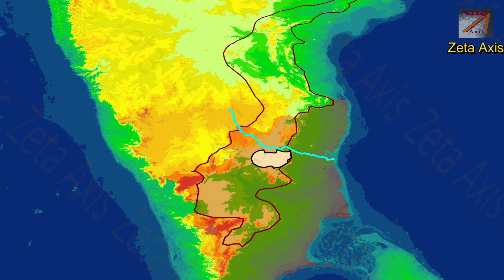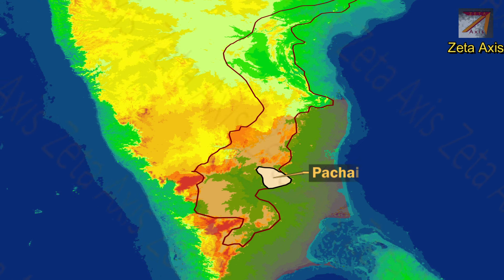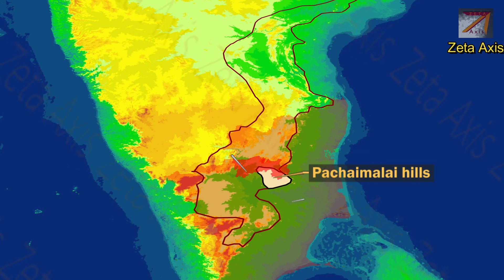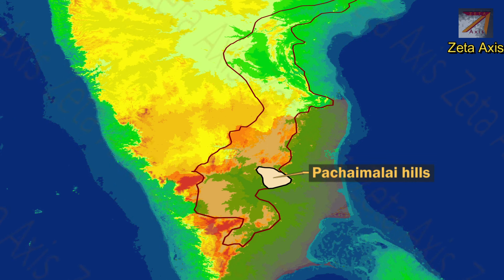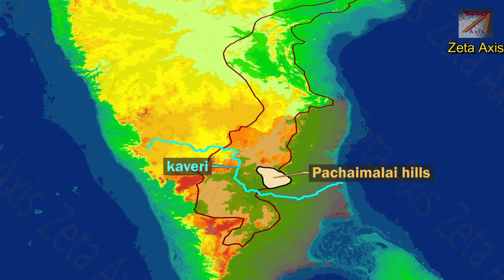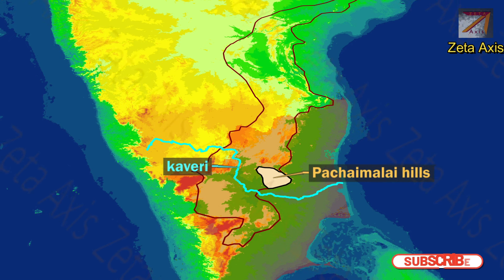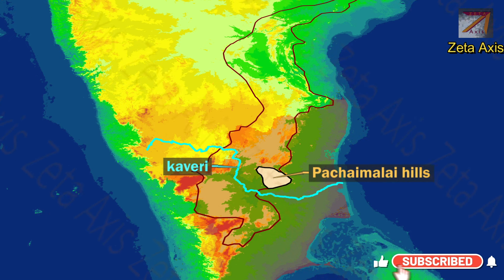The next important mountain range is the Pachamalai hills, which are part of the Eastern Ghats and are located in Salem and Tiruchirappalli districts of Tamil Nadu. The Pachamalai hills are located north of the Kaveri river and have dense scrub forest and tropical deciduous forests due to the heavy rainfall received from the north-eastern monsoon, or retreating monsoon.